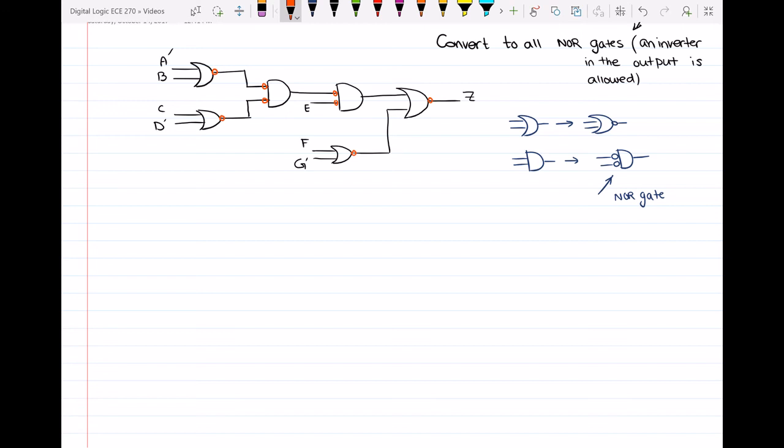Now the next step is to look at the outputs and inputs of each gate. If an inverted output of a gate is driving an inverted input of another gate, then we don't have to do anything because those two bubbles will cancel each other. So what I mean is for this interconnection, as you can see we have an inverted output and inverted input. The same thing for here.